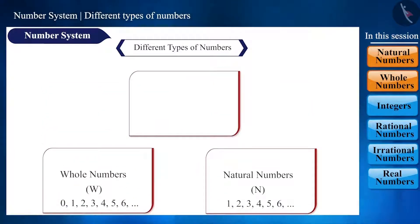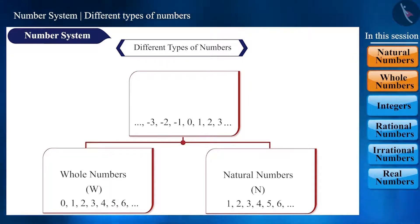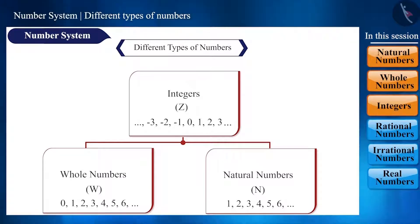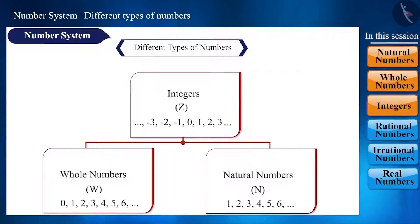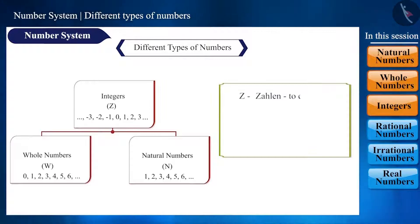If we take negative forms of natural numbers, that is, minus 1, minus 2, minus 3, etc., the group formed is called integers and is expressed with the symbol Z. Did it not occur to you why we express integers with the symbol Z and not I? Z is derived from the German word 'zählen' which means to count, and 'zahl' which means number.